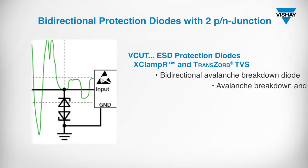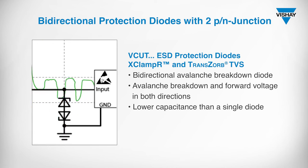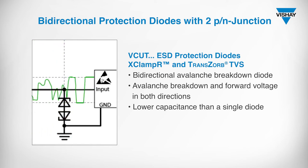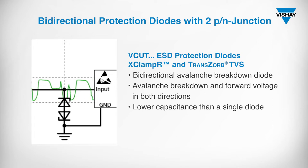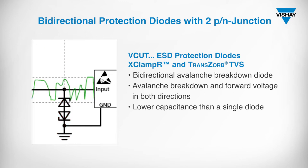An example from our product portfolio is our unidirectional VESD series in various housing sizes. In this second circuit, there are two diodes in a row but with reverse polarity. The capacitance is halved by simply daisy chaining two diodes, thereby improving signal integrity. The signal is limited symmetrically in both positive and negative polarity, which is caused by the bidirectional avalanche breakdown behavior.